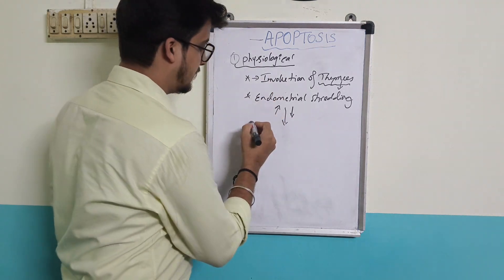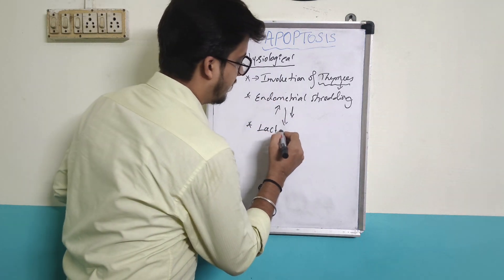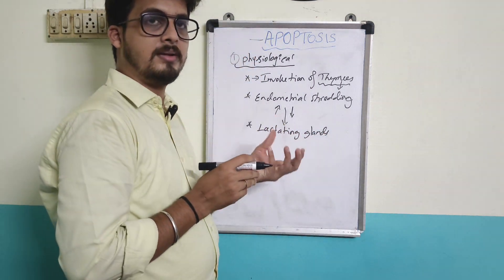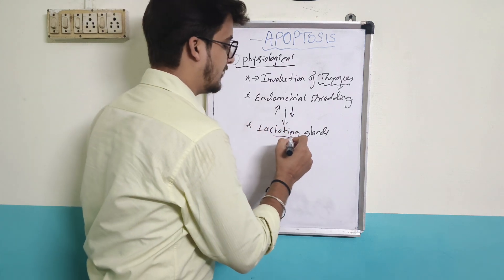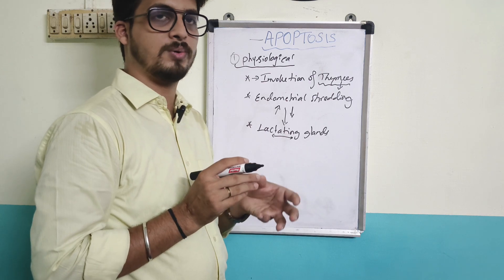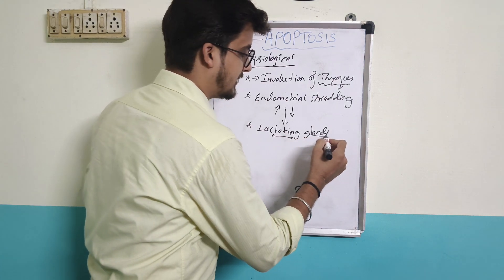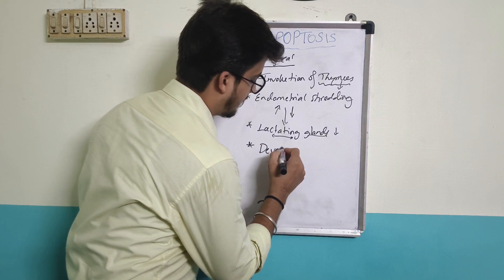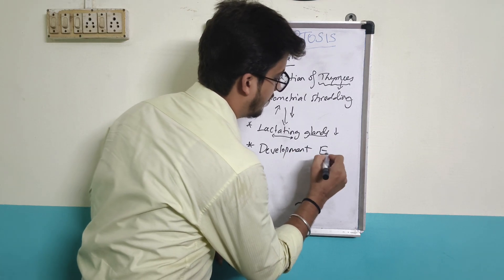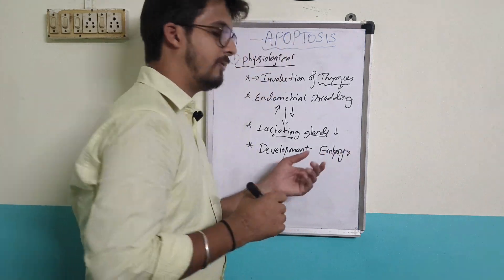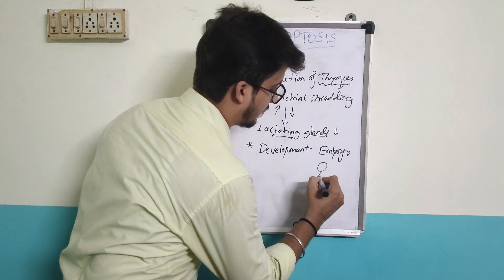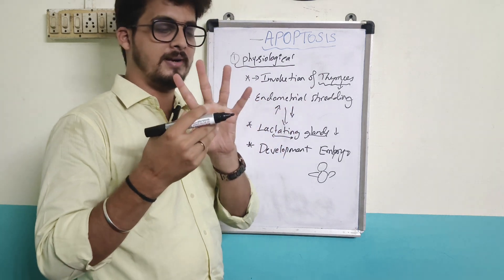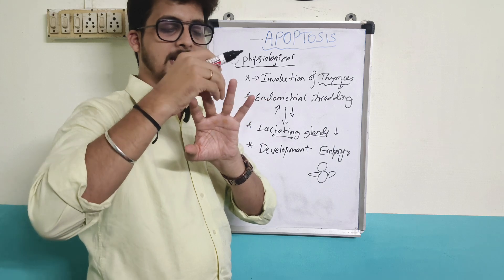The next example is the lactating gland. During pregnancy, breast glands produce milk. Once the baby stops consuming milk, the glands reduce in size. And another example is during development of the embryo — in the early fetus, the digits and joints form through apoptosis.